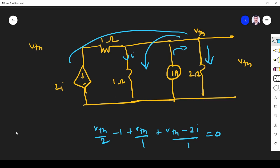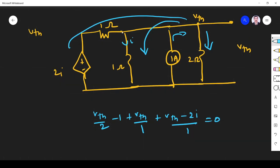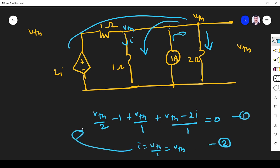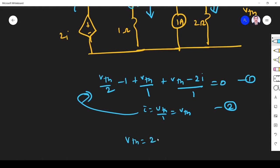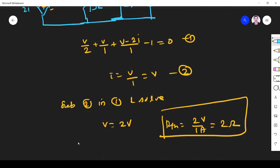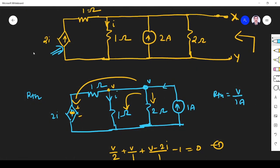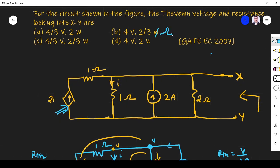Since the voltage at the node is V_Thevenin, the current i equals V_Thevenin/1, which equals V_Thevenin. Substituting this into the KCL equation and simplifying, we get V_Thevenin equals 4 volts. So V_Thevenin is 4 volts and R_Thevenin is 2 ohms. Checking the options, V_Thevenin = 4V and R_Thevenin = 2 ohms corresponds to option D, which is the correct answer.